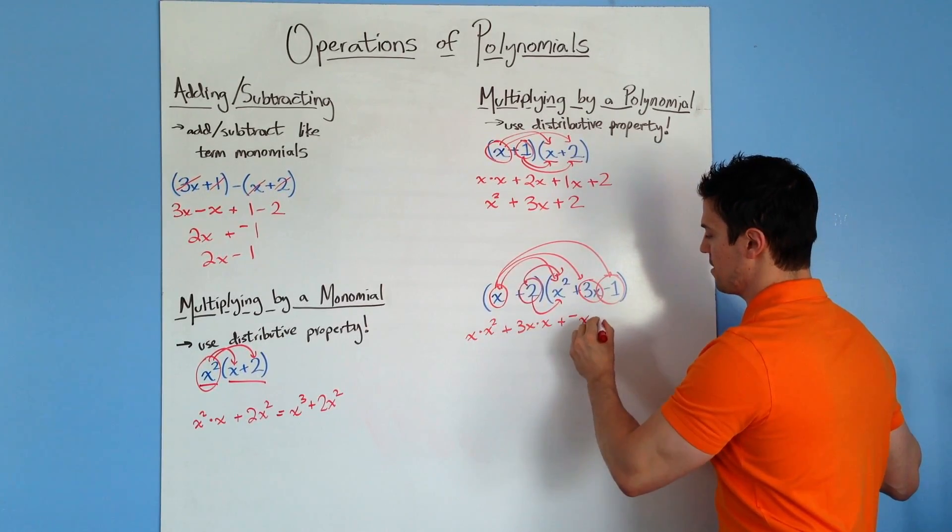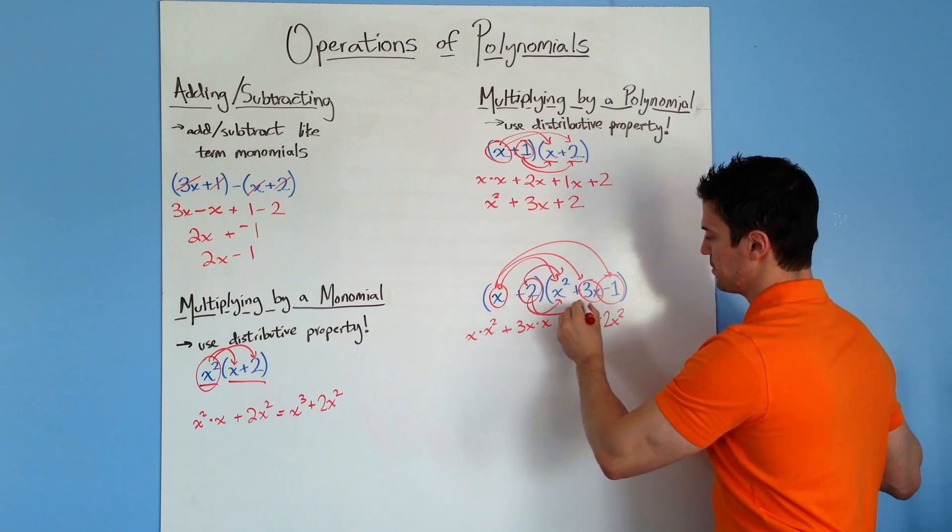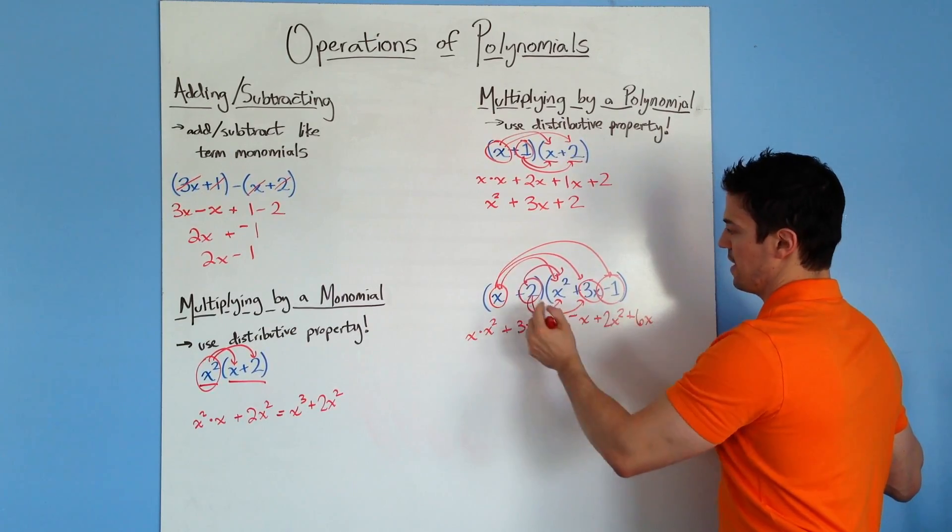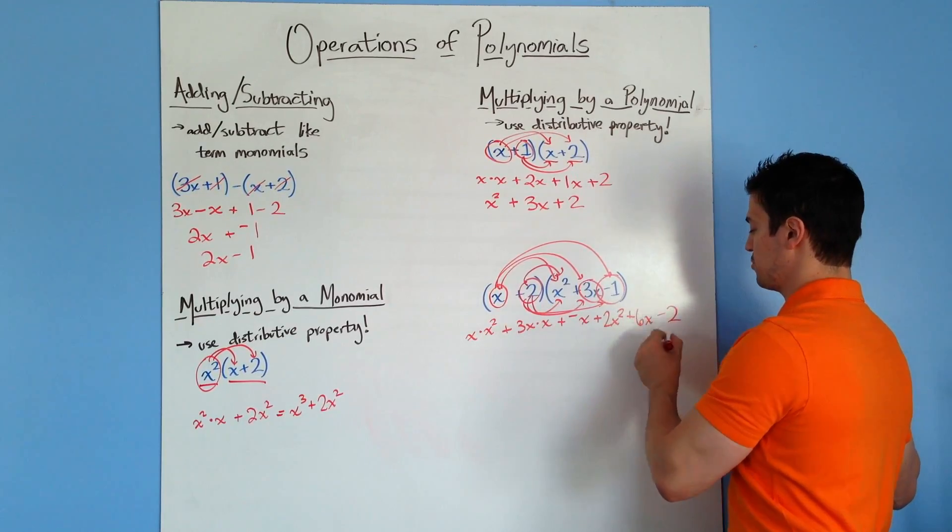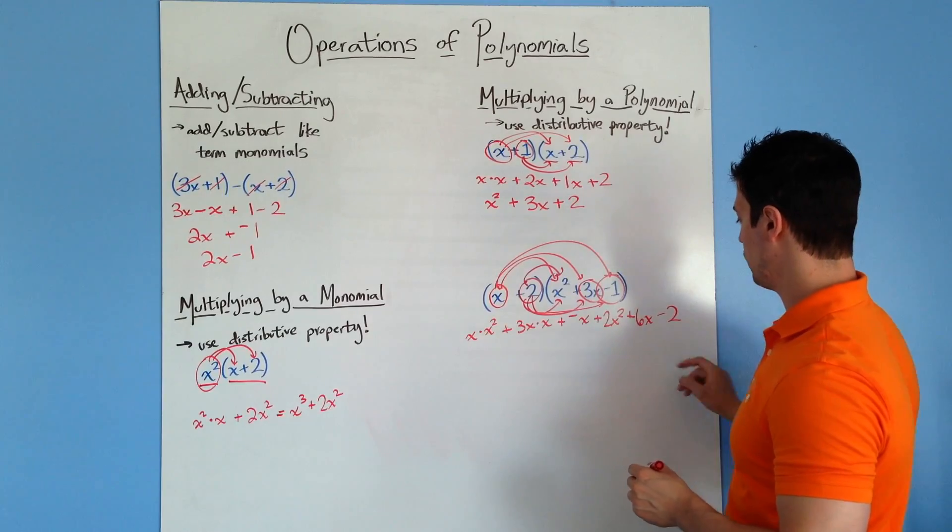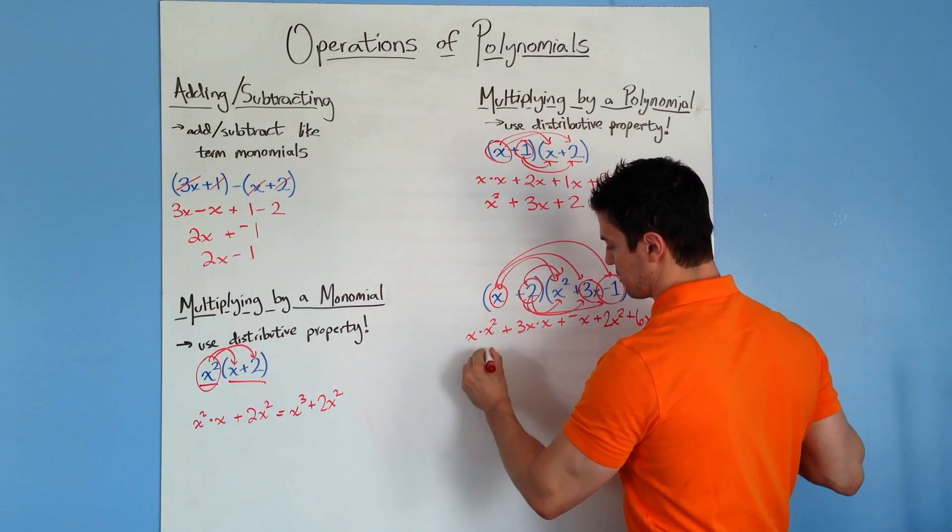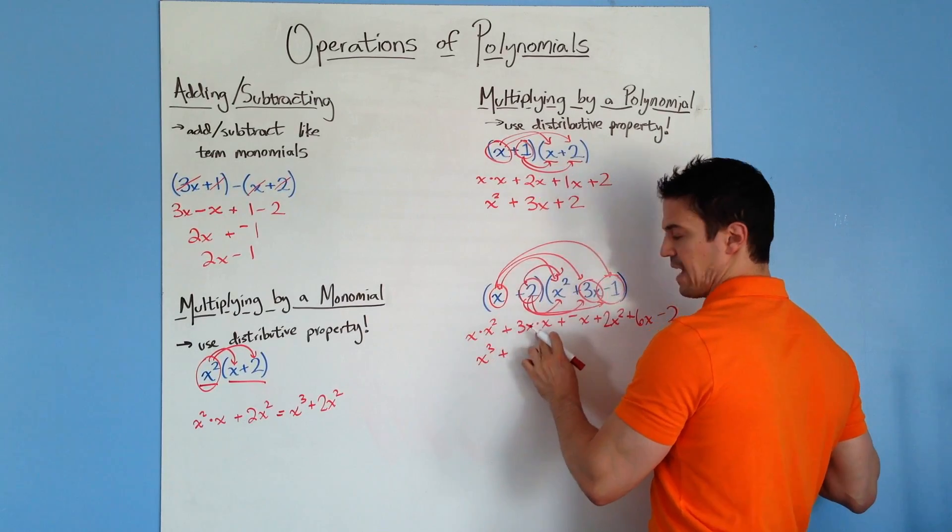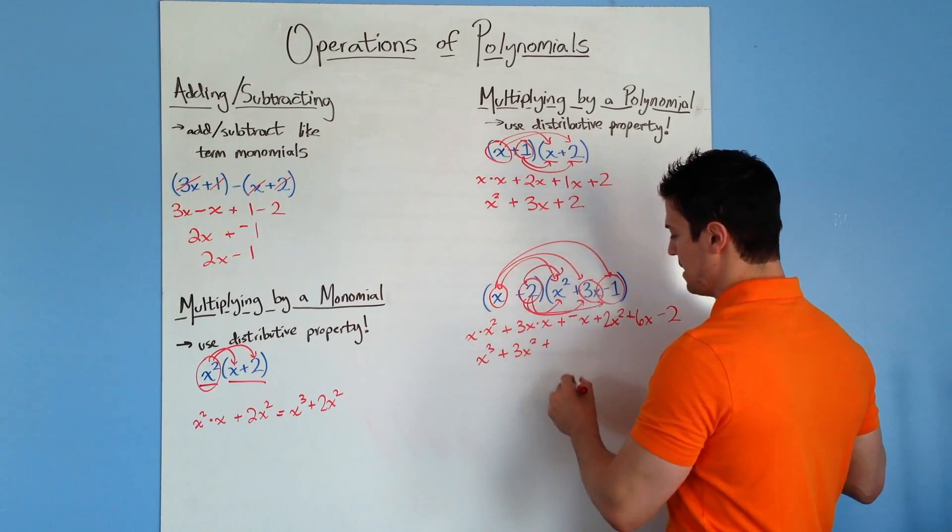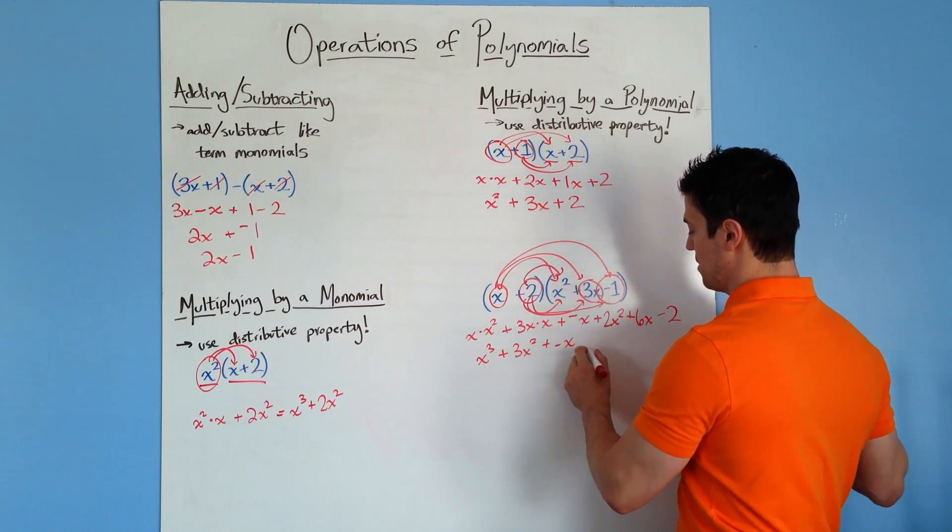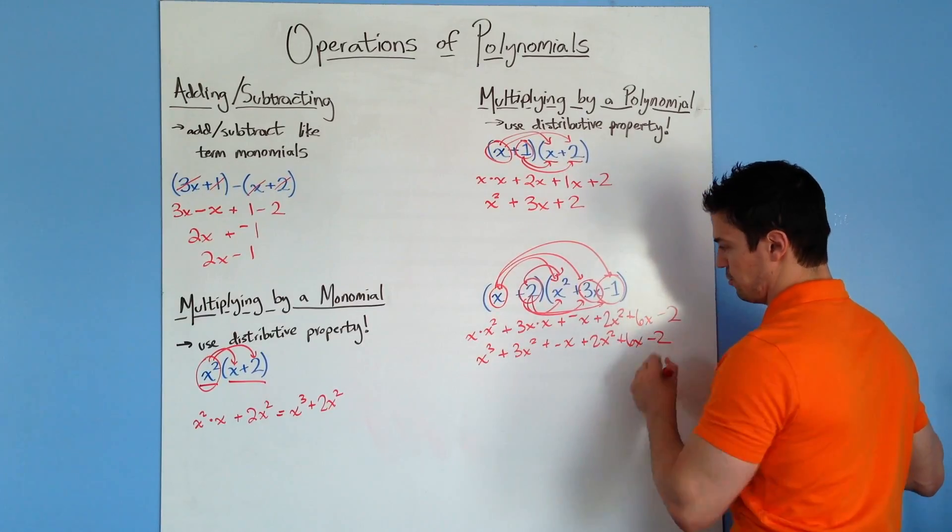Then I'm going to do the exact same thing with this 2. So 2 times the x squared, which would be plus 2x squared. 2 times the 3x, which would be plus 6x, and then 2 times the negative 1, which would be minus 2 or plus negative 2, whatever you're comfortable with. x times x squared would be x cubed plus 3x times x is 3x squared plus negative x plus 2x squared plus 6x minus 2.